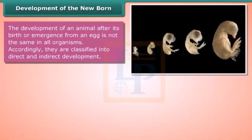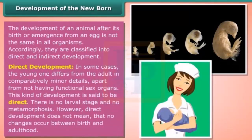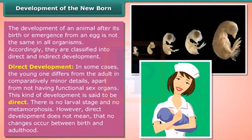The development of an animal after its birth or emergence from an egg is not the same in all organisms. Accordingly, they are classified into direct and indirect development. In direct development, the young one differs from the adult in only comparatively minor details, apart from not having functional sex organs. There is no larval stage and no metamorphosis.